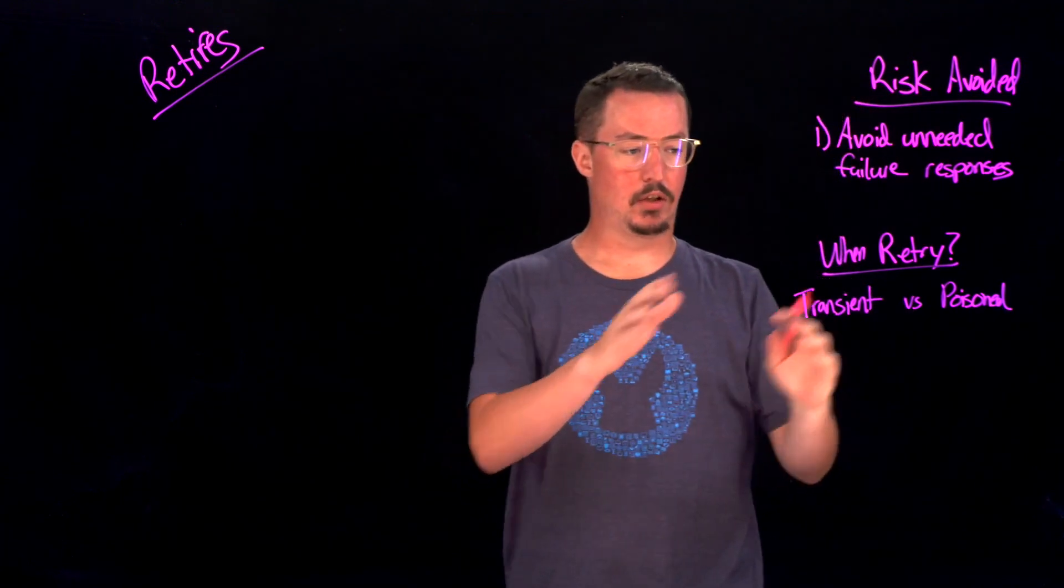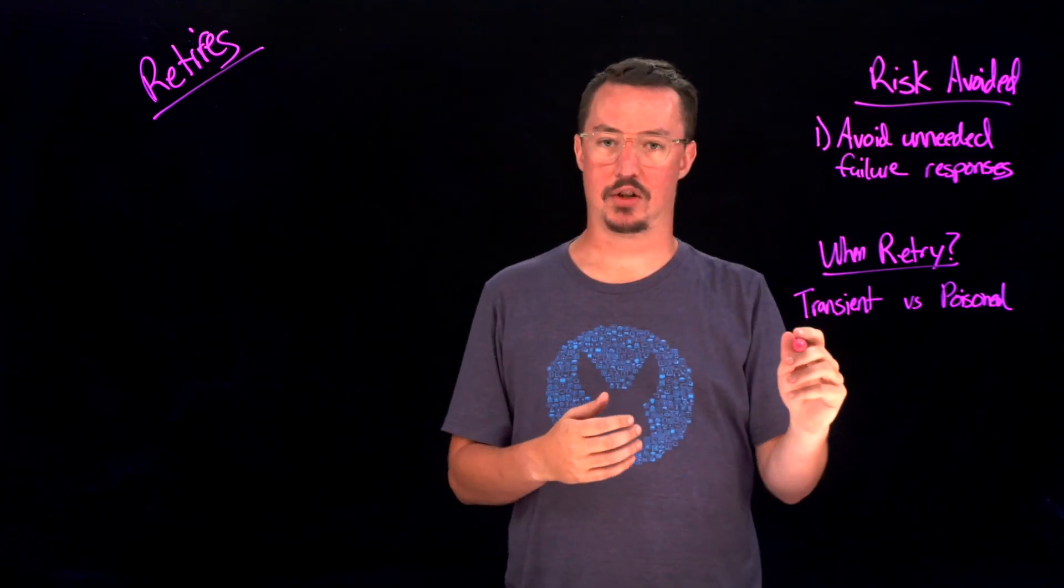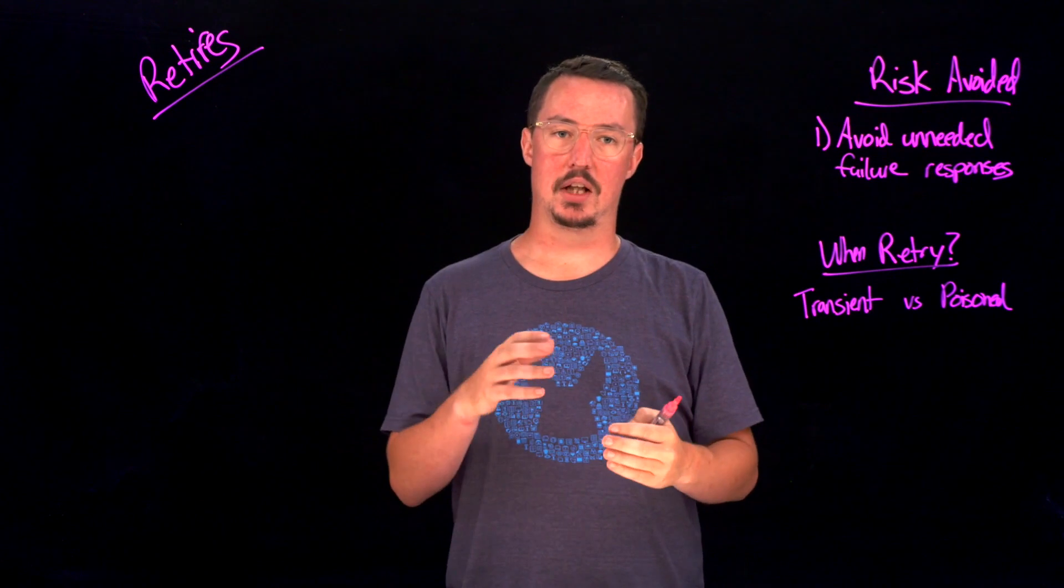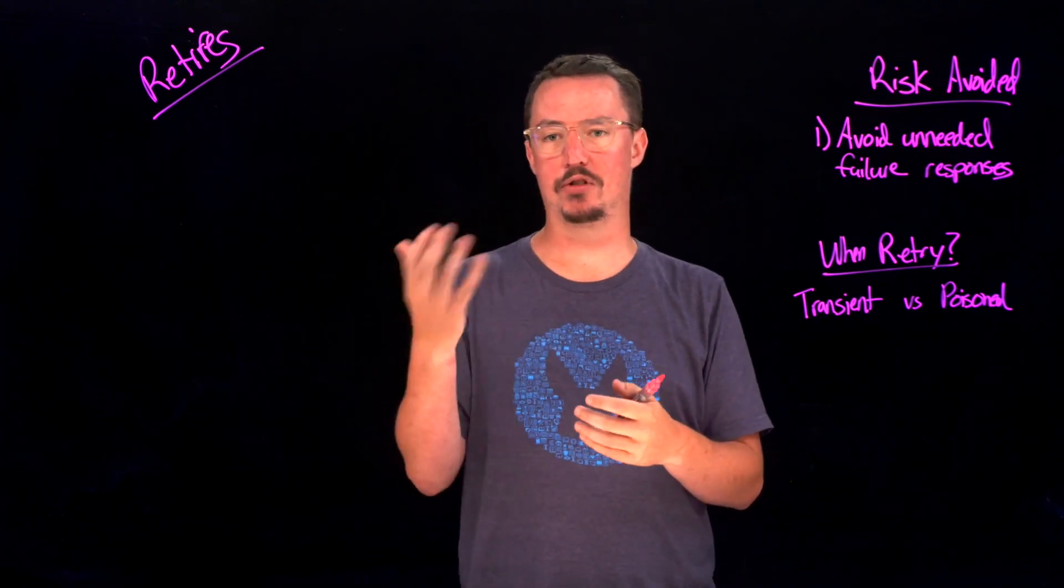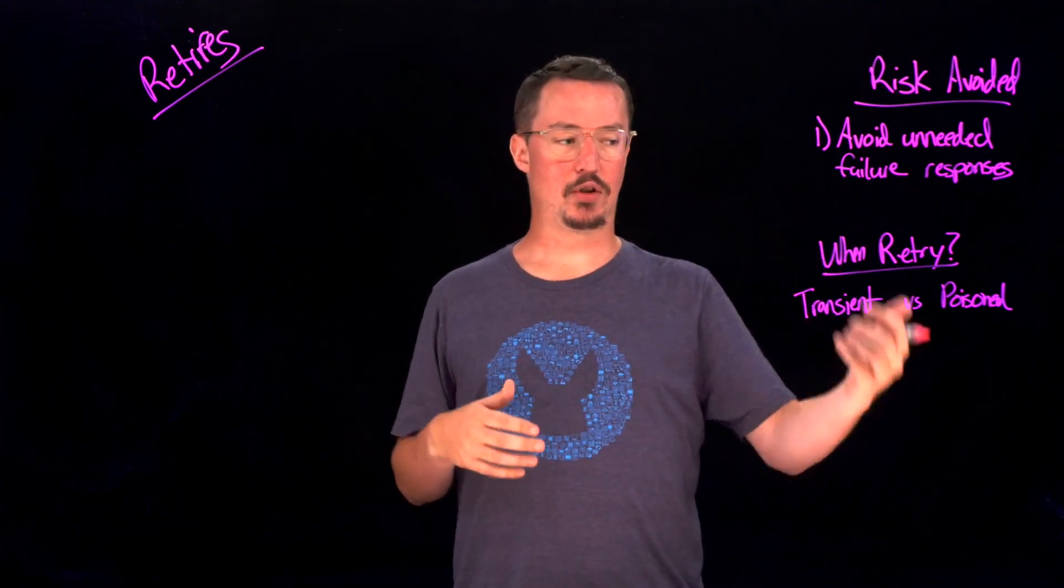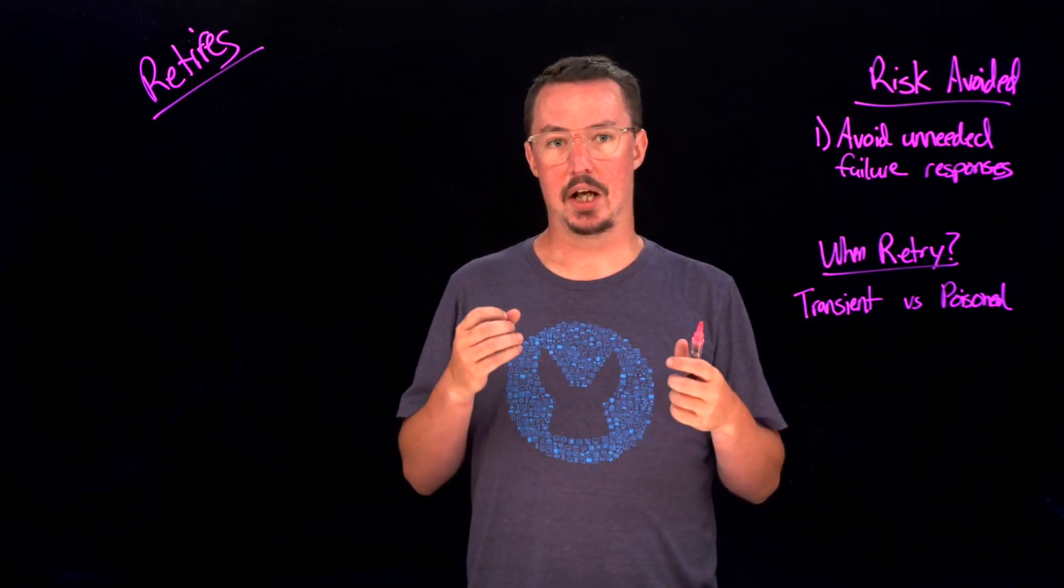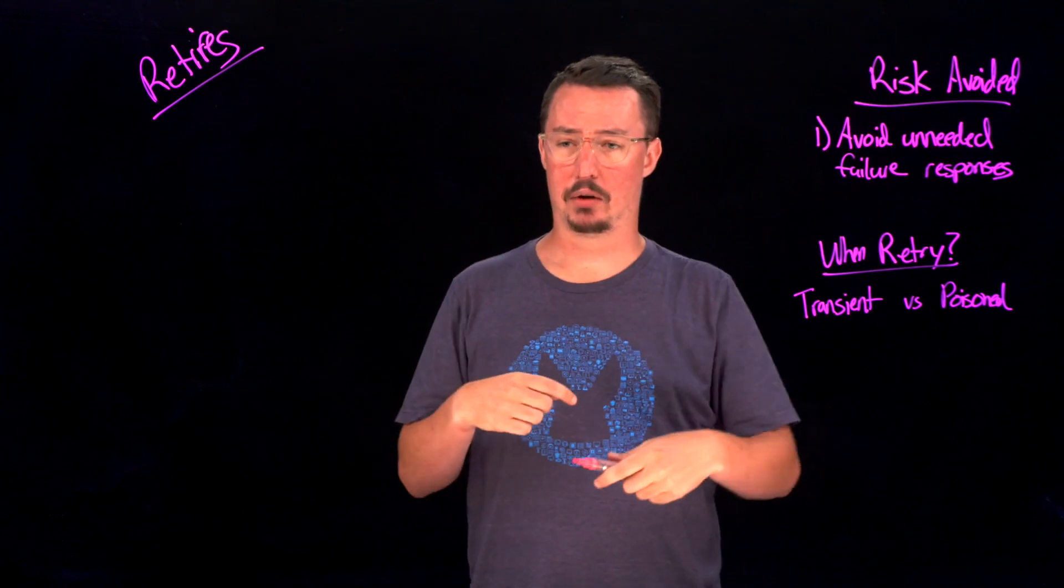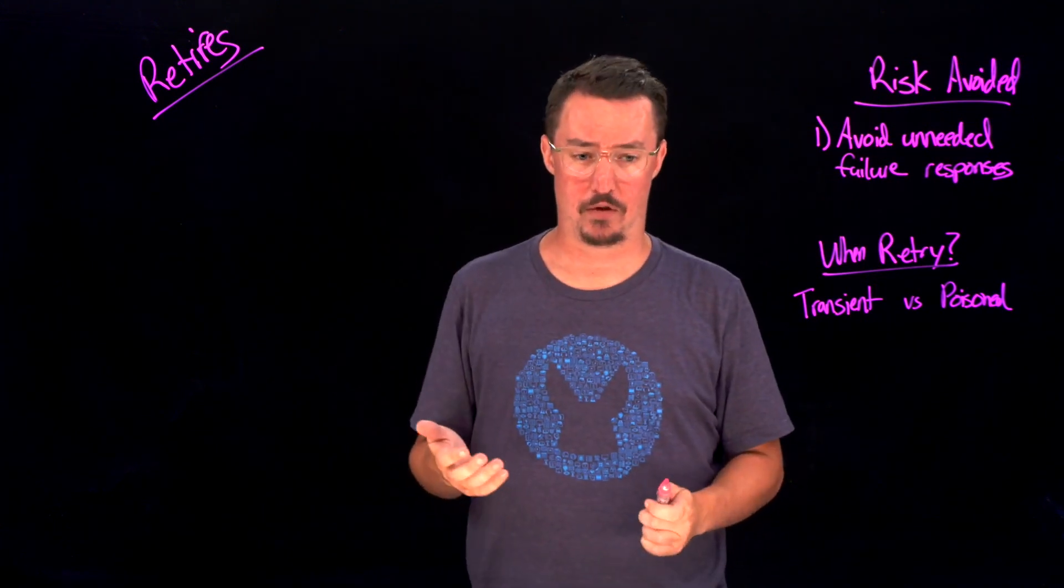So when I say those two words, basically what I mean by a transient error is this is an error that could just pop up every once in a while, but if you retry doing it, it's going to just go away. Versus a poisoned message is one of those where no matter how many times you retry that, you're going to receive a failure.